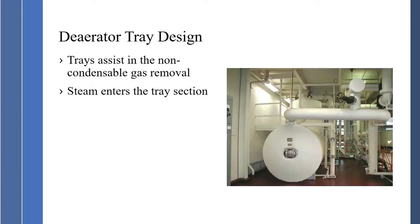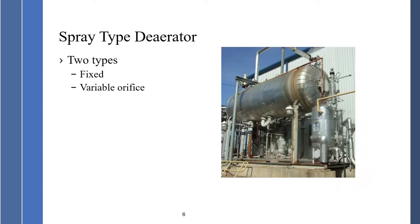The first type is the deaerator tray design. Trays assist in non-condensable gas elimination. Steam enters the tray section — in this picture, trays are located in this section, and you have steam coming in here to assist in the process. The spray type deaerator can have two types: a fixed or a variable orifice design. Again, steam is used to assist in eliminating non-condensable gases.